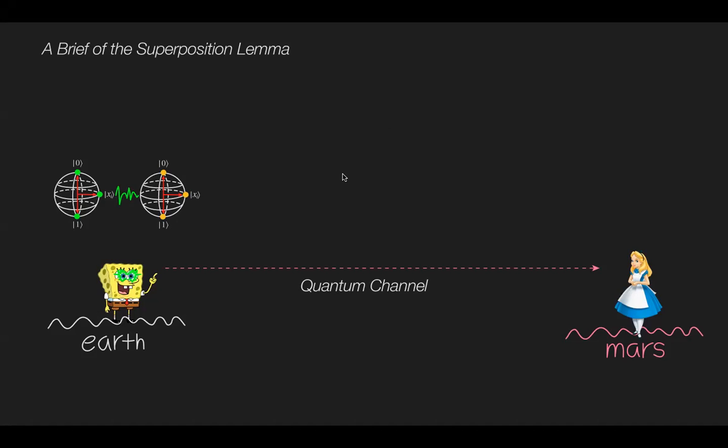Suppose an adversary Bob prepares an entangled quantum state Xi, where qubit zero and qubit one are equally superposed. Then Bob sends one portion of the entangled state to Alice.